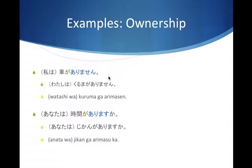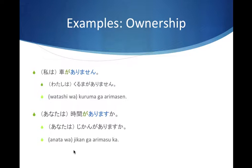The next example is asking a question: 'Do you have time?' Time is jikan. Omitting the subject, you say: 'Jikan ga arimasu ka?' — literally 'Is there time?' In context, this means 'Do you have time?' You could say 'Anata wa jikan ga arimasu ka?' but anata is usually omitted — and can sometimes even be rude to use. So simply: 'Jikan ga arimasu ka?'